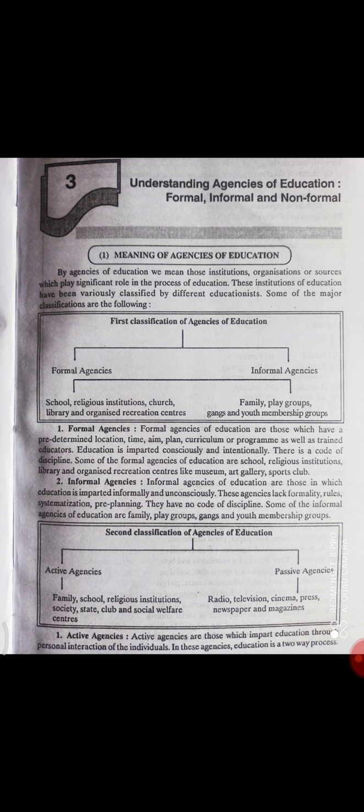Formal agencies of education کی مثالوں میں سب سے پہلے school آتا ہے، پھر religious institutions جیسے درس گاہ، library، scout clubs، museums — یہ وہ agencies ہیں جہاں ایک plan کے تحت، predetermined time کے ساتھ، intentionally اور consciously education دی جاتی ہے۔